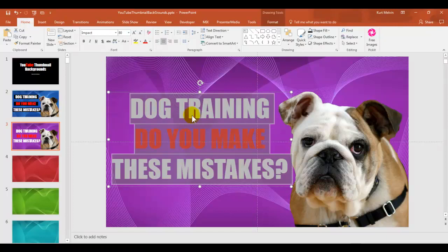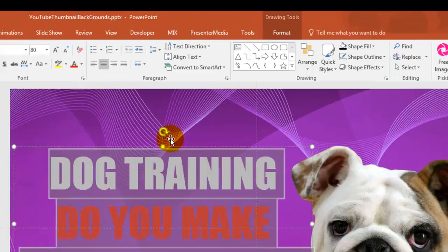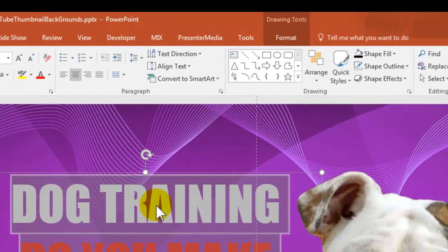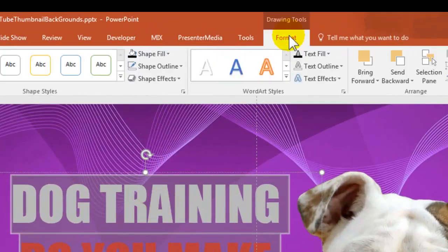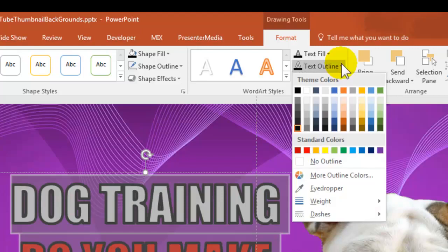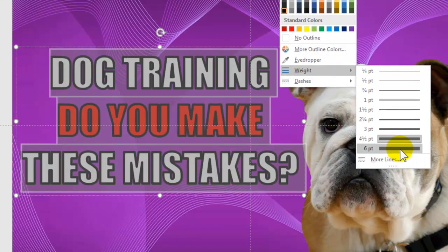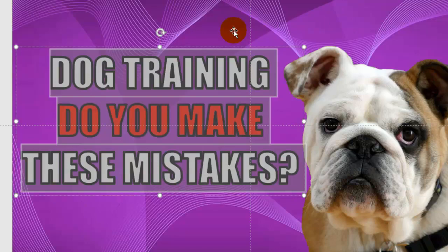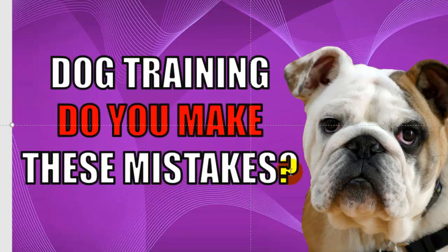Select all the text, and you'll probably want to add an outline. Use the text outline for this — just come up to Format and you'll see Text Outline. I'm going to choose black, then go back up to Text Outline and choose the weight. You want a pretty good weight, because having this outline makes your text a lot easier to read.